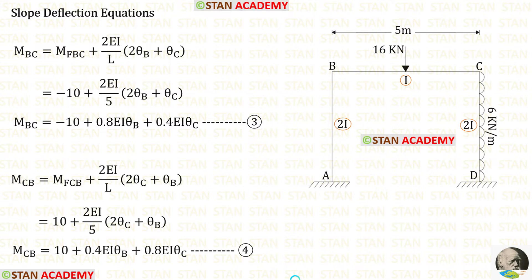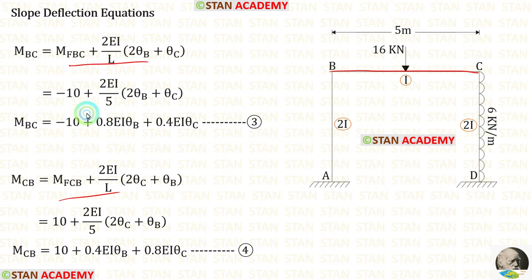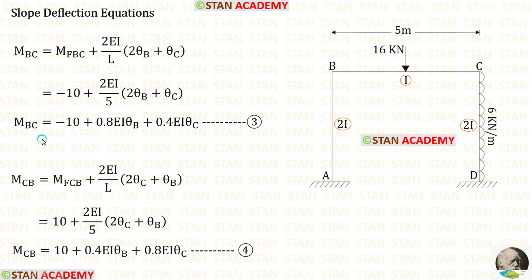Now let us make the slope deflection equations for beam BC. In the equations, first let us apply the fixed end moments. The length of BC is 5. Finally, in beam BC we have made 2 equations.